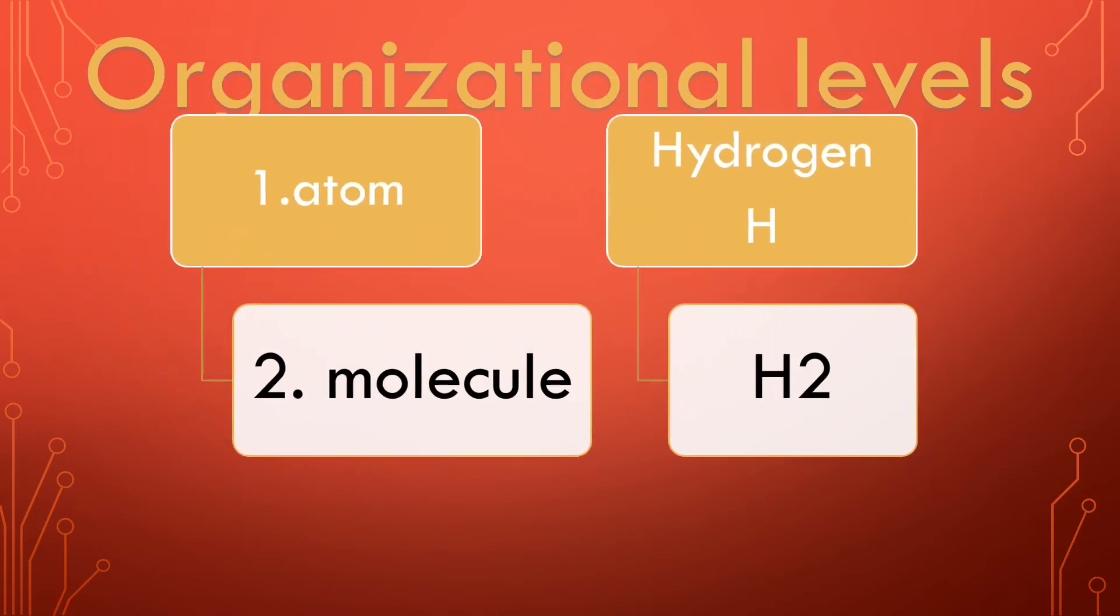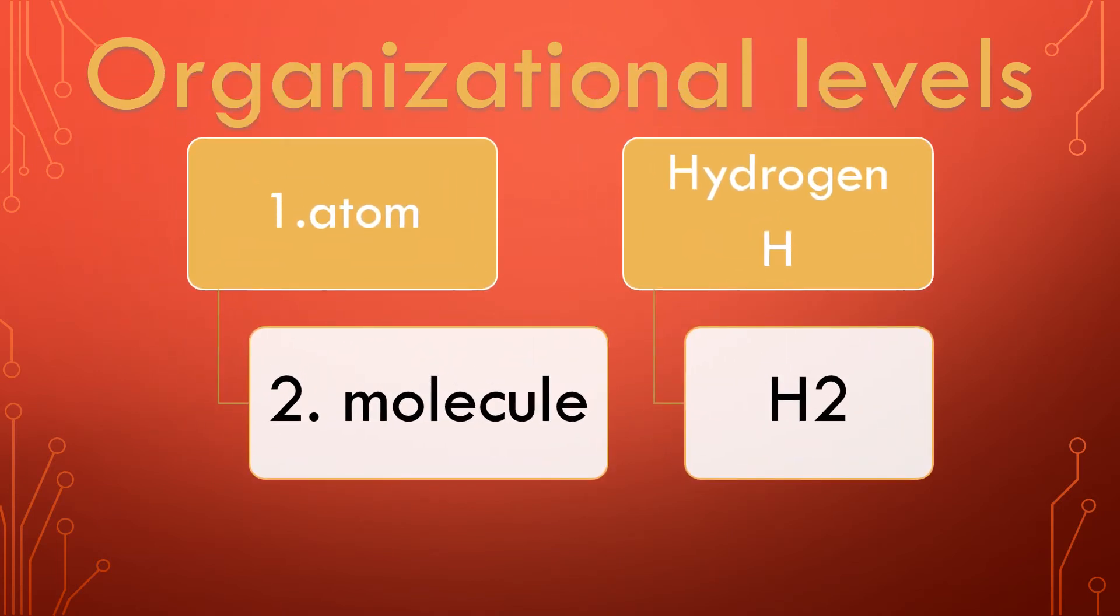Now let's see the organizational structures or the organizational levels of physiology. It starts with the atom. Atom is the smallest organizational level of physiology - atoms like hydrogen or oxygen. Then we go to molecule. Molecules: when two atoms or more than two atoms are combined together.